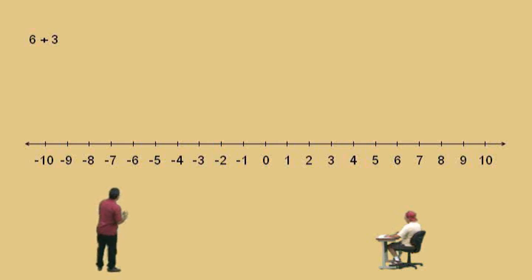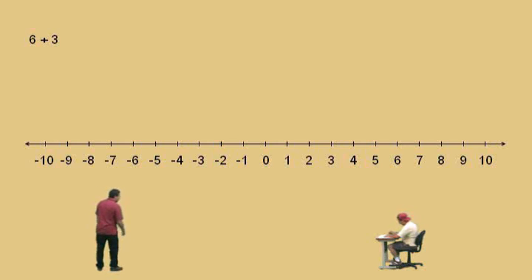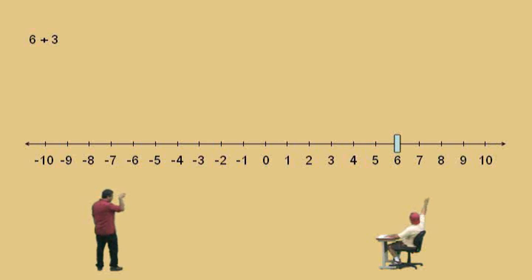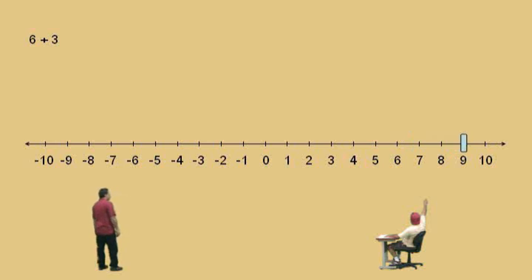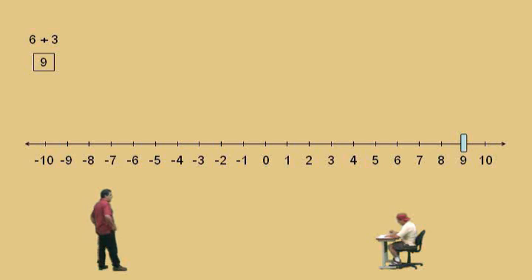So let's do a simple problem: 6 plus 3. Charlie, where do we start on this number line? At 6. And we move to the right, how far? Three. And where do you end up? Nine. At nine — there you go. Don't forget to circle your answer. Very nice, Charlie.